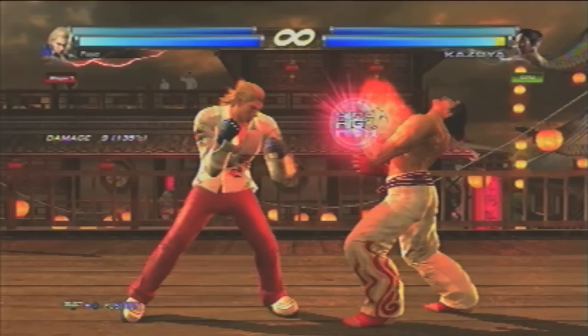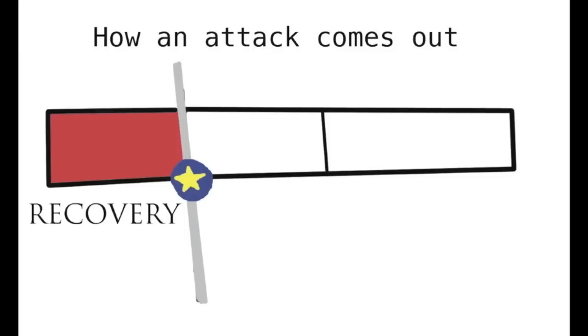We can use frames to describe the attributes of an attack. Every attack in Tekken, from a simple jab, to powerful uppercuts, to weird looking rocket blasts, have three phases that they always go through. Starting with the blocking position: first is your startup frames, then your active frames, then recovery frames, and then back to blocking.